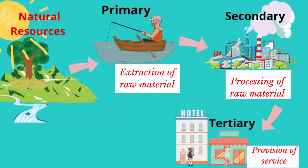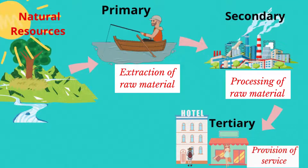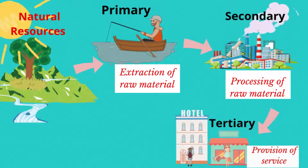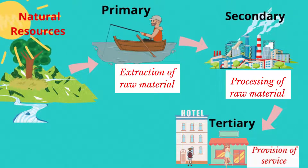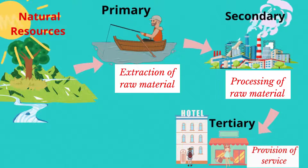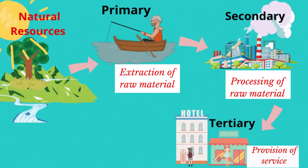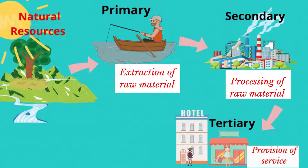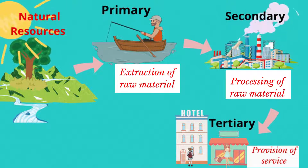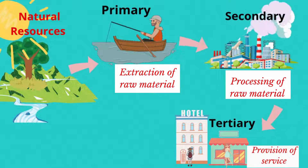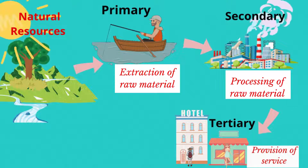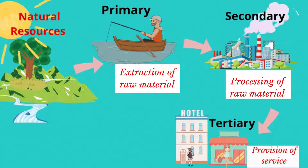Secondary industries add value to the raw material. They include manufacturing industries and construction industries. Both primary and secondary industries create tangible products or goods.